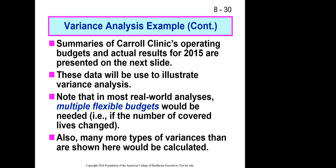We now have a static budget, which refers to the expectations we had at the beginning of the year or before the beginning of the year. Then we have our post data — now that the year has actually gone through, we have information about how things actually went. We're going to build a flex budget that integrates those two pieces of data to help us make comparisons and analyze the difference between our expectations and what actually happened. You might have to have multiple flex budgets, but for our purposes we'll just have the one flexible budget.